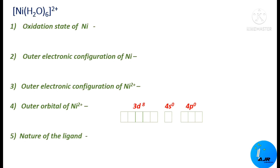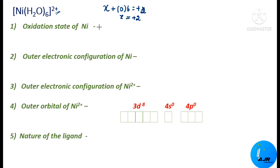Look at the first complex: Ni(H₂O)₆²⁺. First, we should find out the oxidation state of the central metal atom Ni. We shall take that as X, and H₂O is a neutral ligand, so the charge on the neutral ligand is 0 times 6. The overall charge of the complex is +2, so X is equal to +2. The oxidation state of Ni is +2, meaning nickel exists as Ni²⁺.